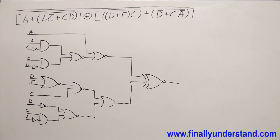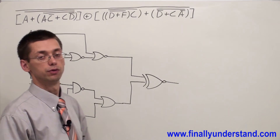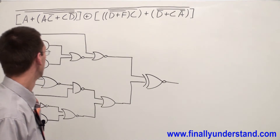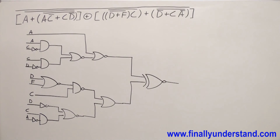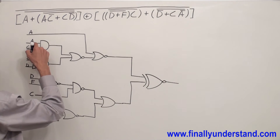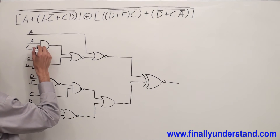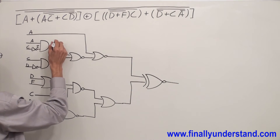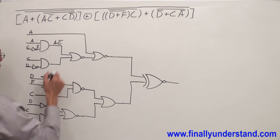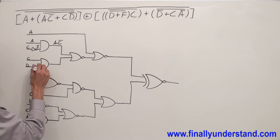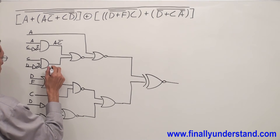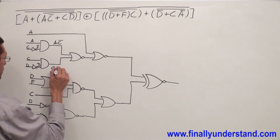Let's prove that whatever I drew on the board is correct by finding the output function of this circuit. C goes to the inverter — this gives me C-not. C-not going to the AND gate with A gives me A·C-not. Then D goes to the inverter giving D-not, so the output of that AND gate is C·D-not.